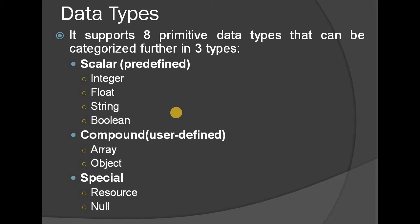Then array and objects — array and objects are compound, which means user-defined. Then the special type includes resource and null. These are special types of data types.